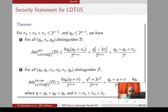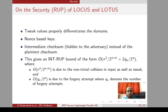Even in the INT-RUP setting we achieve a very high security bound of min((n+k)/2, n). The bound for LOTUS is almost the same as for LOCUS: (n+k)/2 for privacy and min((n+k)/2, n) for INT-RUP security. The main reason we achieve INT-RUP security is that tweak values properly differentiate the domains.